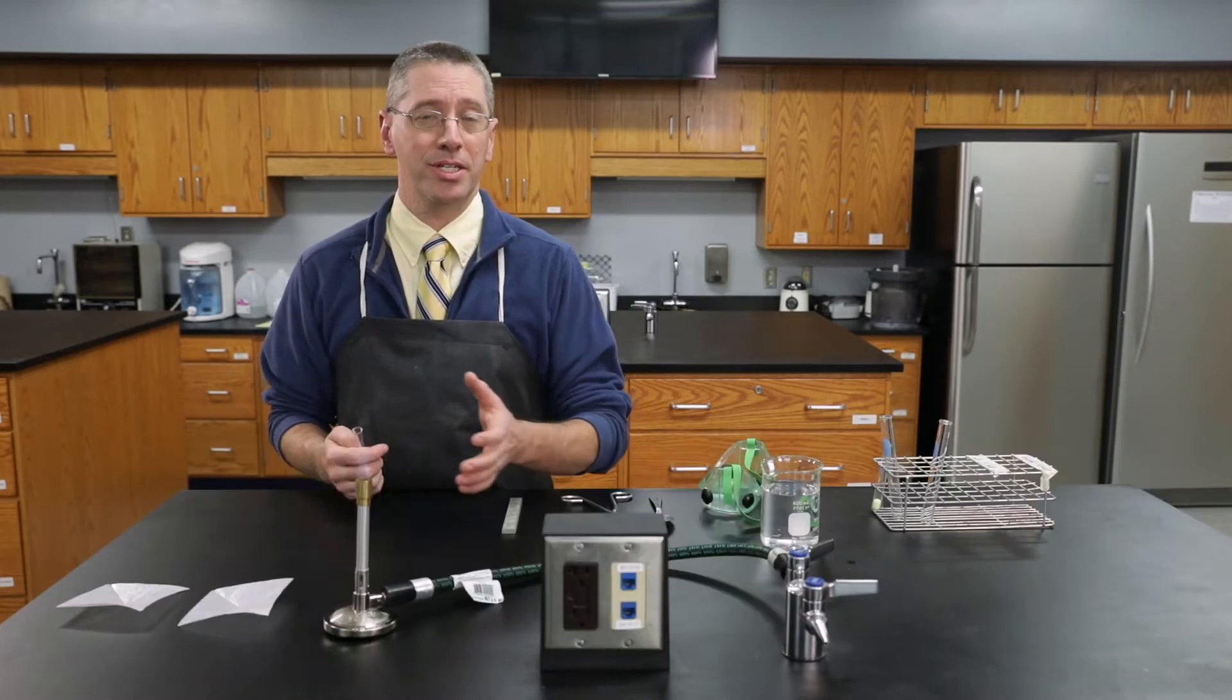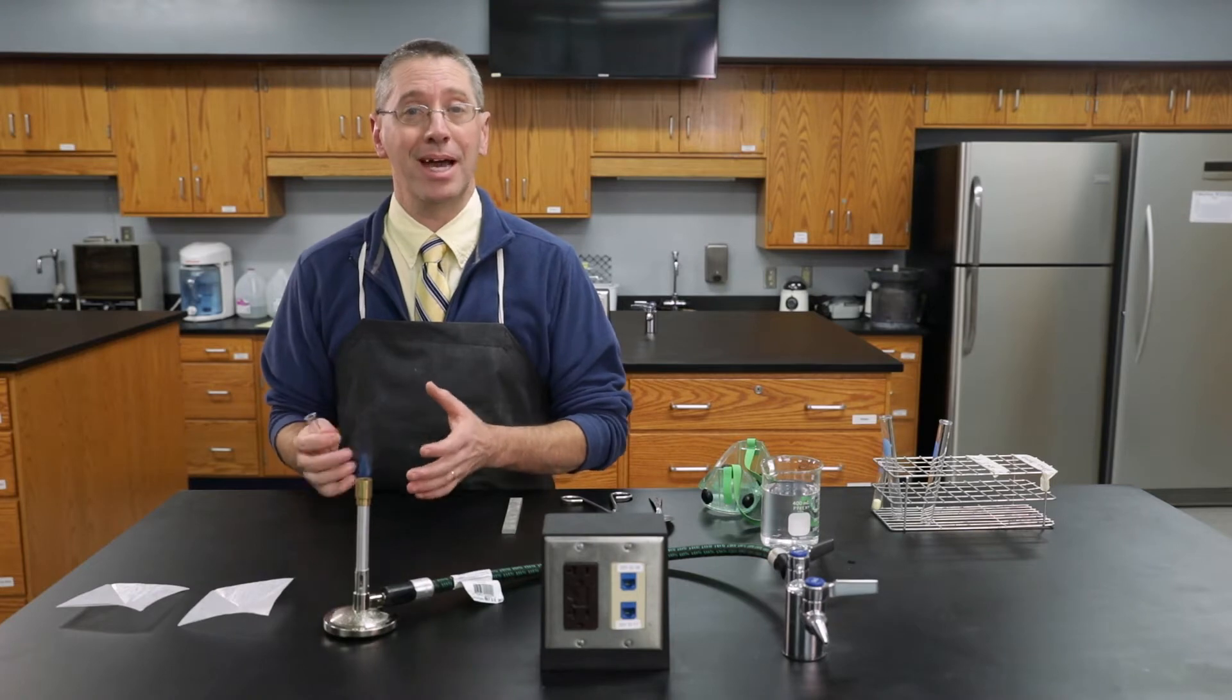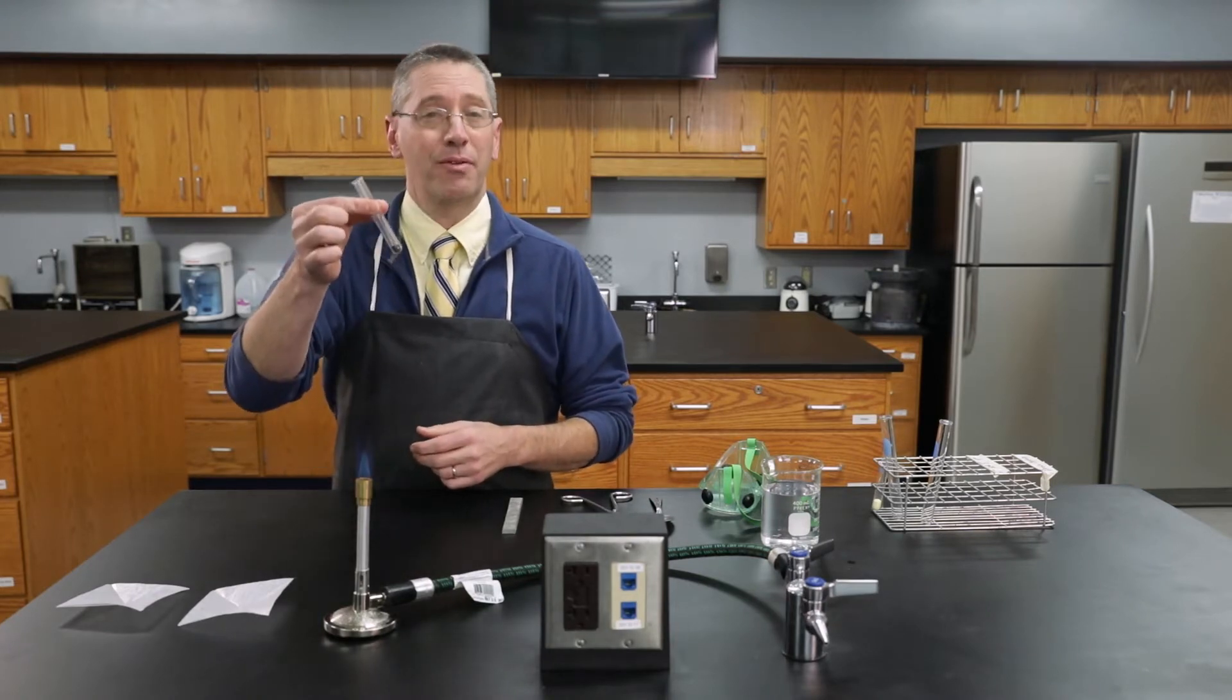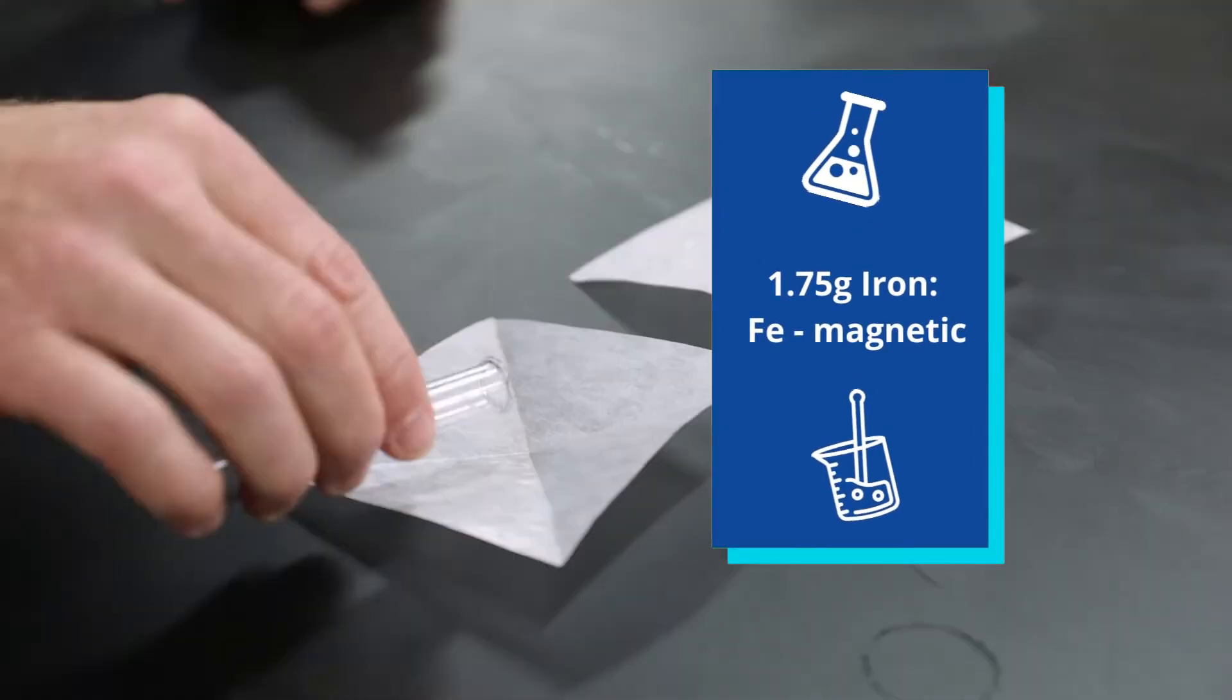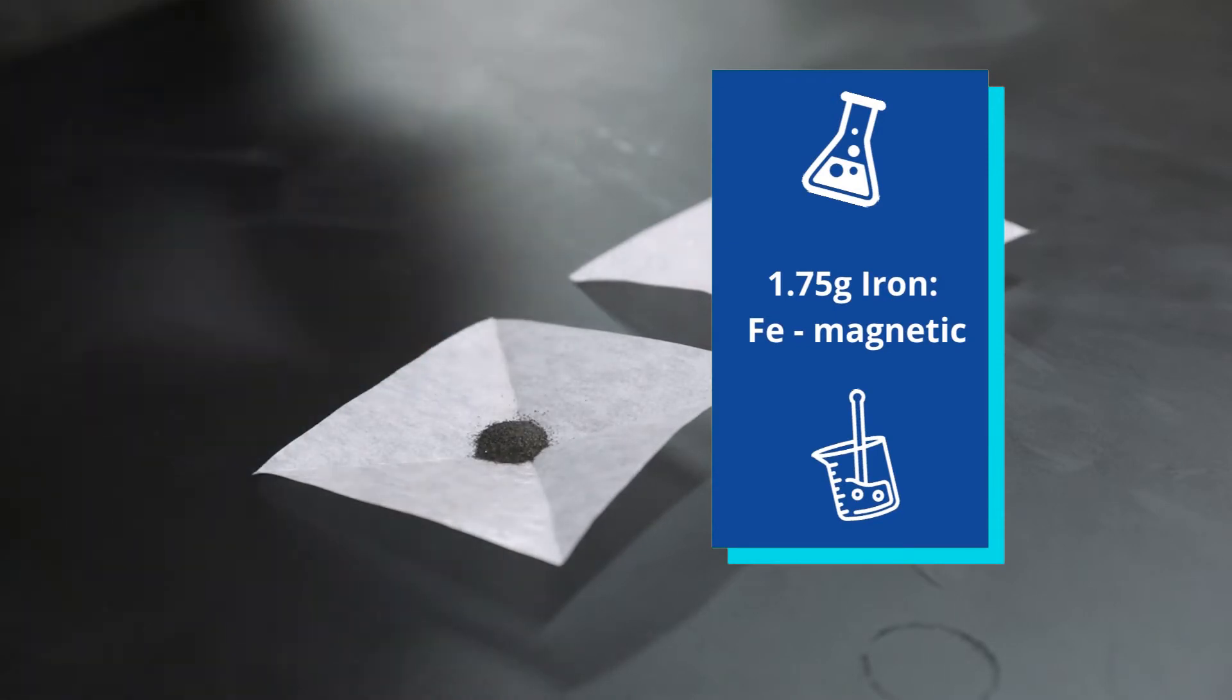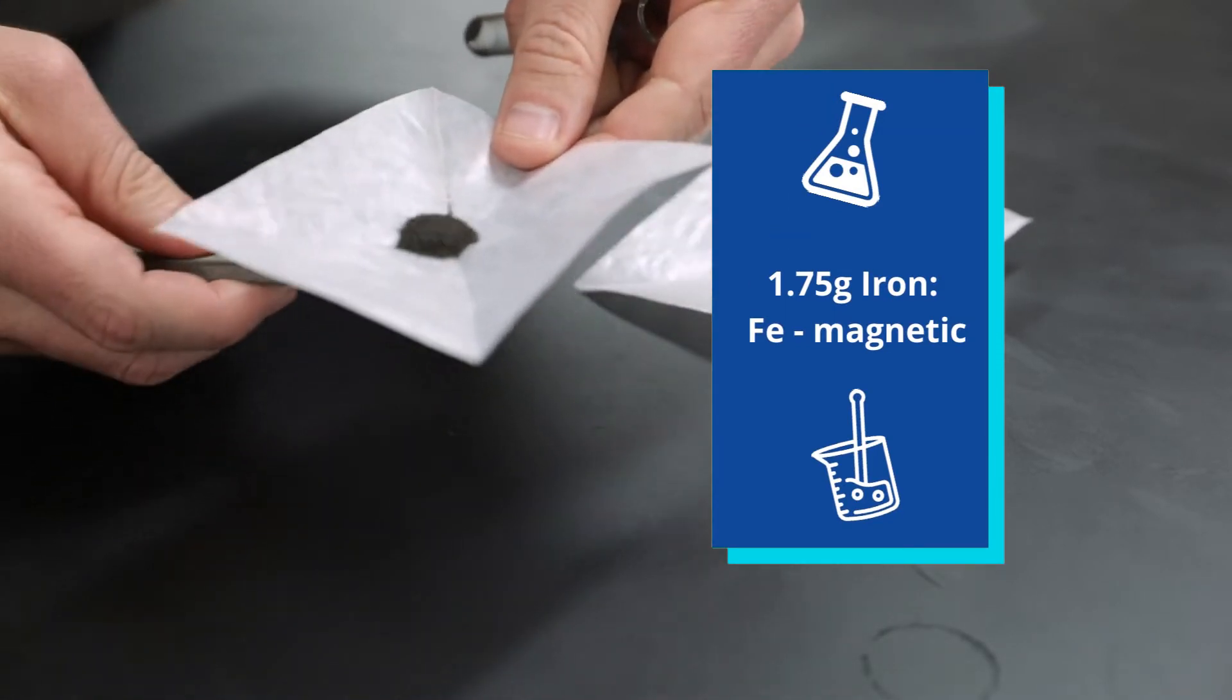In general terms we say element A plus element B produces compound AB. Here we have 1.75 grams of iron which is a gray metal and it's magnetic.